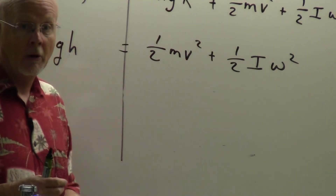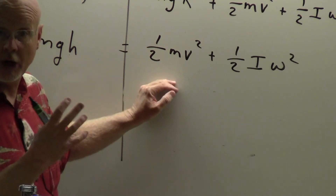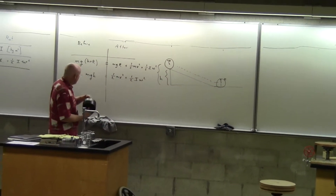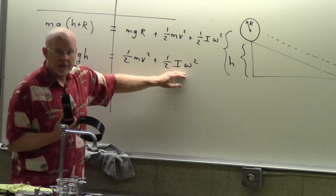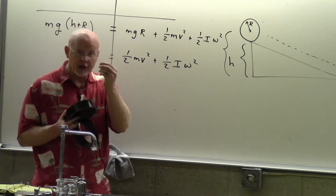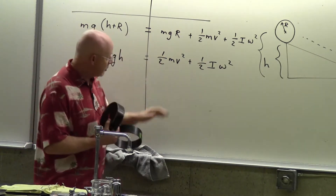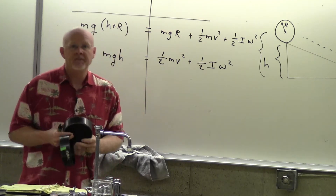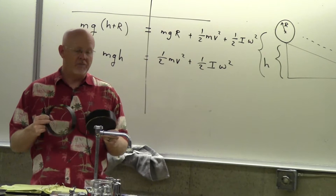If your share of rent is $400, you only have $100 for groceries. But if rent is $300, you have $200 for groceries. Similarly, as the disk and hoop roll down, the total energy released is the same. But the hoop pays more in rotational kinetic energy — like $400 rent — leaving less for translational kinetic energy, while the disk pays less rotationally, leaving more for translation.